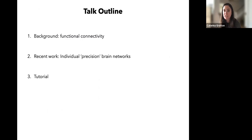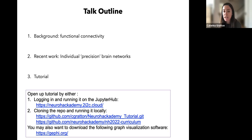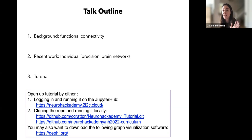Today's talk will focus on understanding coordinated interactions between different brain regions, as opposed to the more standard task fMRI evoked signal responses. There are three main sections: general background on functional connectivity, some of our work using precision fMRI approaches, and then the tutorial. You can access the tutorial via JupyterHub or GitHub. I'll mention that elements at the very end for visualizing graphs use the free software Gephi — I'd encourage you to download it now.